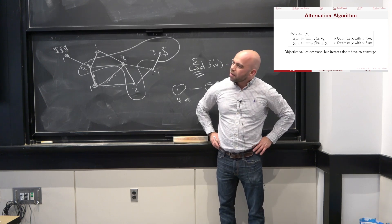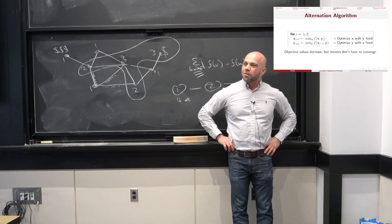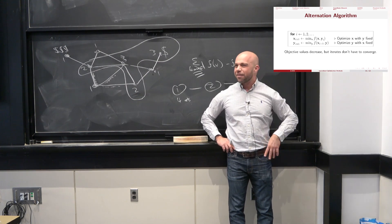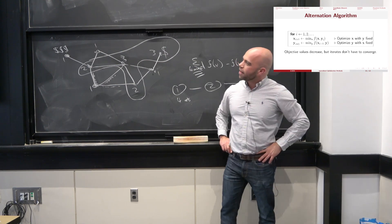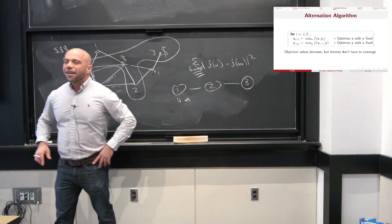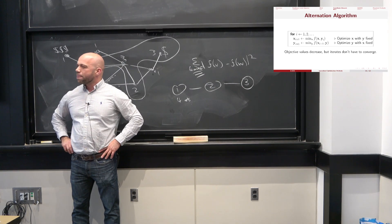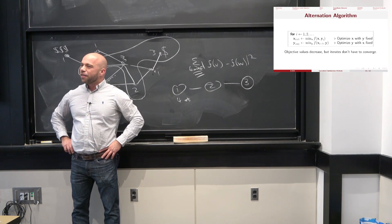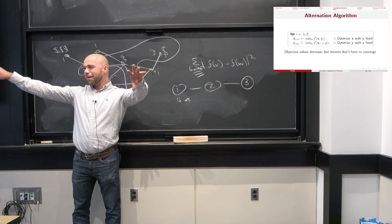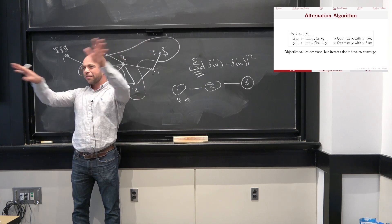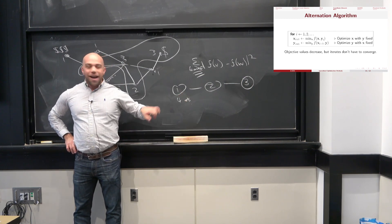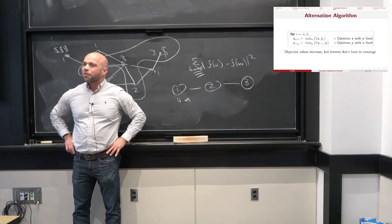We talked about alternation in two extremes. One is you only have two sets of variables — like in the ARAP problem in your homework — where you alternate not for parallelism but because fixing one set makes the other an SVD problem and fixing those makes it least squares, whereas jointly it becomes a mess. In the graph case, alternation lets you do a massively parallel operation.